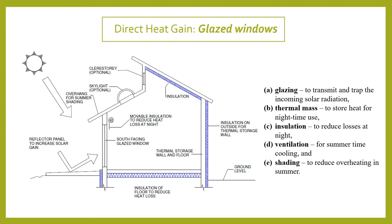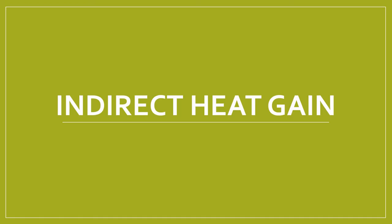During summer you also provide a clerestory window for cooling — heat comes in, moves up, and goes out, maintaining proper ventilation. You also provide an overhang so that you don't have overheating. The shading device has to be properly calculated so that you do not have extra unwanted heat coming in.